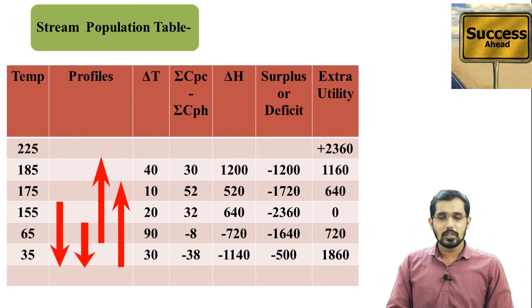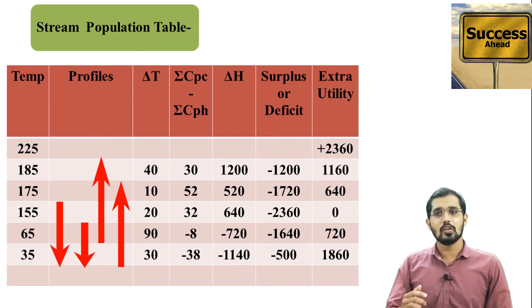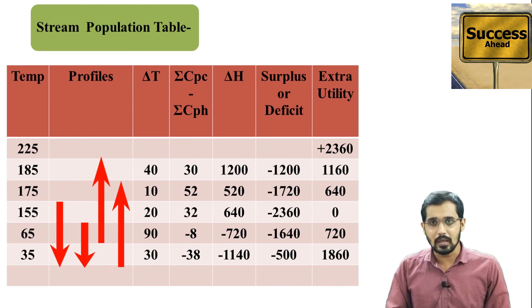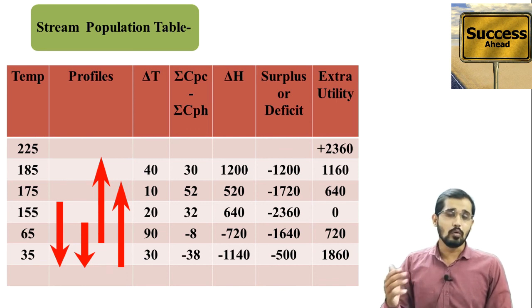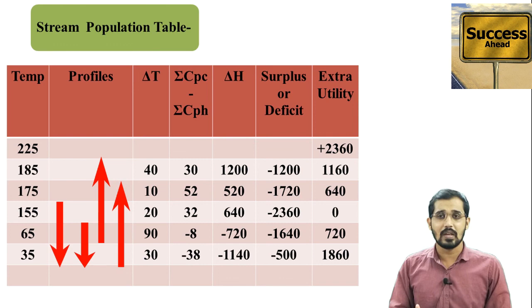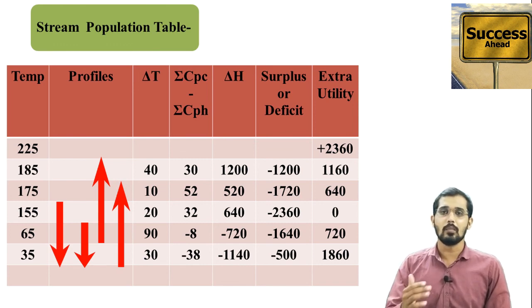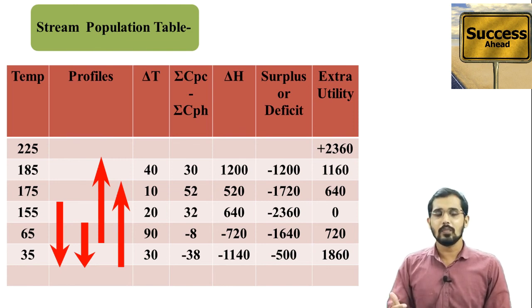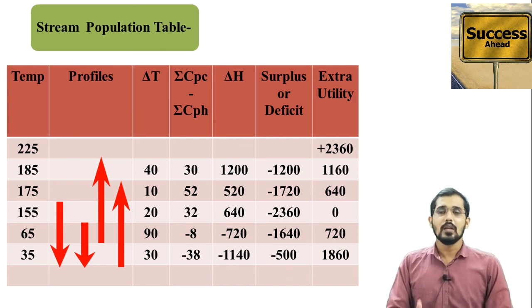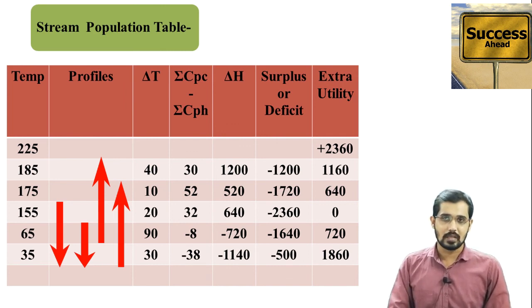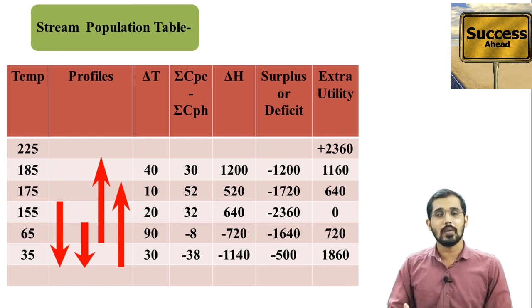This is all about this method. In this lecture, I explained the assumptions of the pinch technique, the steps involved in solving problems, and how to find the minimum hot utility, minimum cold utility, and heat flow rates for cold and hot streams. This numerical can be asked in your exam for 7 marks. We will continue in the next lecture with the next topic. Thank you very much.